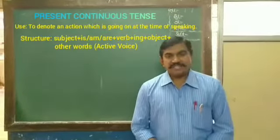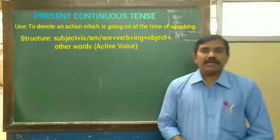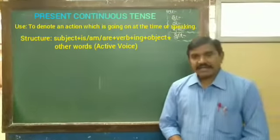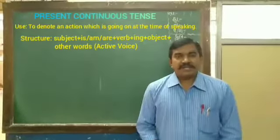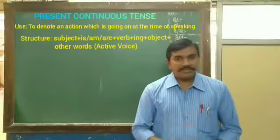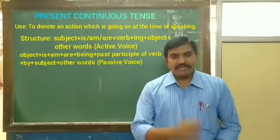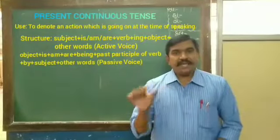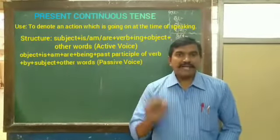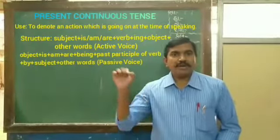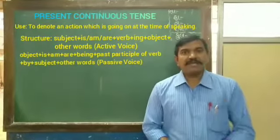It is passive. The object becomes the subject. The object is the same. You can see the object — it is 'is/are' plus the past participle of the verb. The past participle is the third form of the verb.